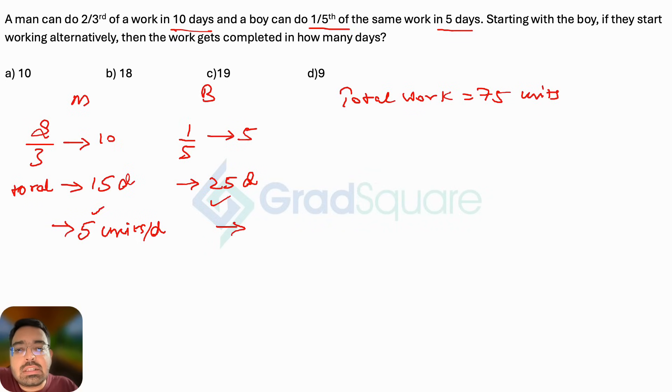Now what's the question saying? Starting with the boy. So on the first day boy is working and boy will finish three units. Then on the second day man will be working and the man would finish five units. So total amount of work done in two days will be eight units.